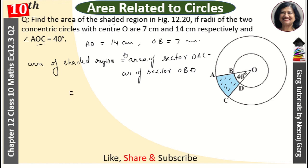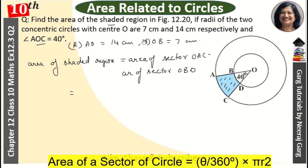So formula, if we take capital R for OA and small r, this will become theta upon 360 into pi R square minus theta upon 360 into pi r square. Taking common, theta upon 360 into pi common, and in bracket, capital R square minus small r square.